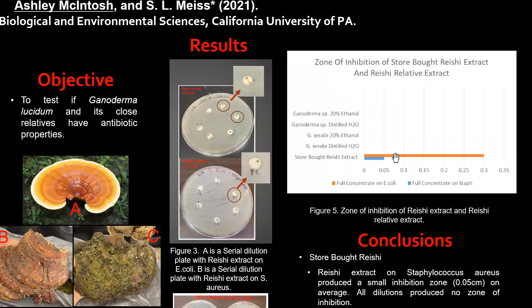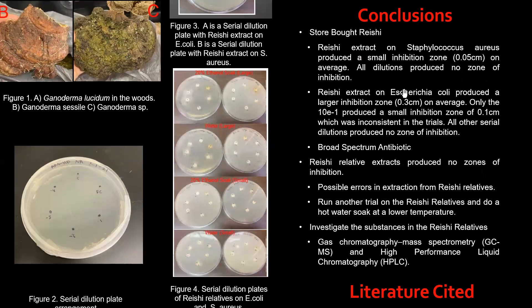As seen in the overall results, only the store-bought reishi extract produced any results. The full concentrate on E. coli produced the largest zone of inhibition and the Staphylococcus produced the smallest. In conclusion, the store-bought reishi was able to produce a zone of inhibition on both Staphylococcus and E. coli, and even though the inhibition zones differed in size, it was still classified as a broad-spectrum antibiotic.